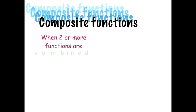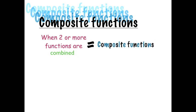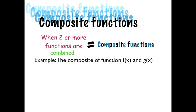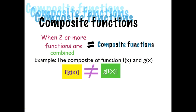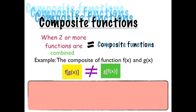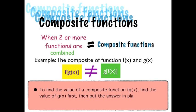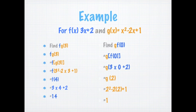Let's move on to composite functions. When two or more functions are combined, that's a composite function. For example, the composite function of f of x and g of x may be f of g of x or g of f of x, but they're both not equal. To find the value of f of g of x, find the value of g of x first, then put it in place of x in the formula of f of x.